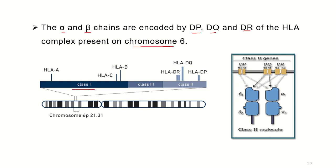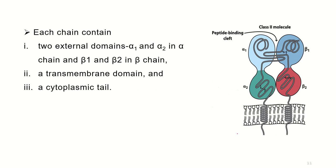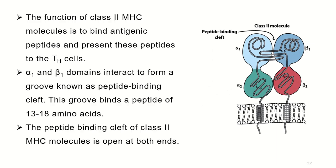In Class 2 MHC molecules there are three sub-regions: DR, DQ, and DP, each encoding an alpha chain and a beta chain. As shown in the diagram for DQ, there are two sub-regions A and B, from which the beta chain and alpha chain are produced respectively. In each chain — both alpha and beta — there are two external domains, one transmembrane domain, and one cytoplasmic tail. For the alpha chain: alpha 1 and alpha 2 are the external domains; for the beta chain: beta 1 and beta 2 are the external domains.